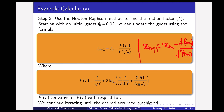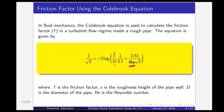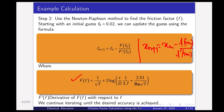Here, F′(f_n) is the derivative of F(f) with respect to f. The equation F(f) is obtained by moving all terms to one side, giving: F(f) = 1/√f + 2 log(ε/d × 1/3.7 + 2.51/(Re√f)). The challenging part is calculating the derivative of this function.